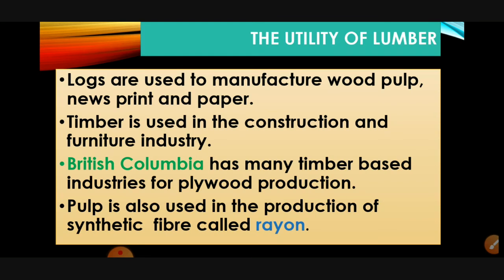The utility of lumber: logs are used to manufacture wood pulp, newsprint, and paper. Timber is used in the construction and furniture industry. British Columbia has developed many timber-based industries and plywood production. Pulp is also used in the production of synthetic fiber called rayon. So the four uses are: wood pulp for newsprint and paper; construction and furniture; plywood; and synthetic fiber rayon.